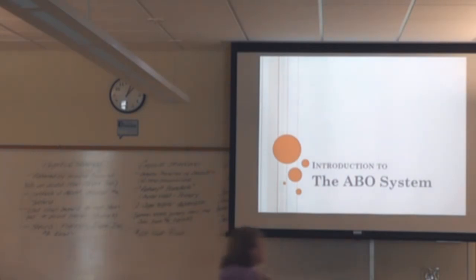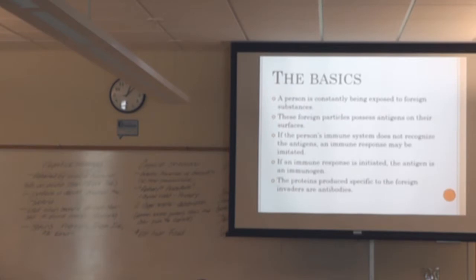The ABO system is the basis for everything that we do in Blood Bank. It was the first system that was identified, and so based on its biochemistry and a lot of the happenings that you find in the ABO system, it kind of applies or actually contrasts in some ways to the other systems that we're going to learn about as we proceed through blood banking. So basics.